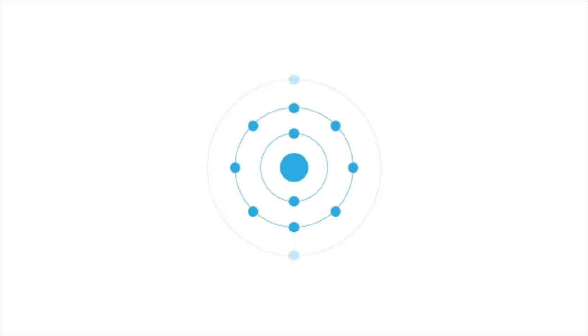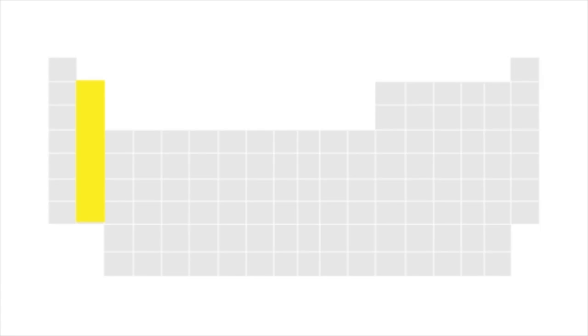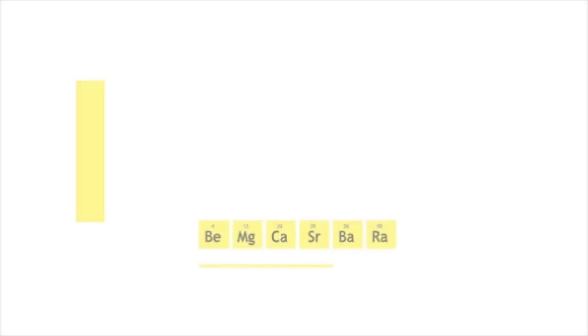Like the alkali metals, these metals except for magnesium are stored in oil. Similar properties and reactivity trends are also observed moving down the group. Their density and reactivity increases.